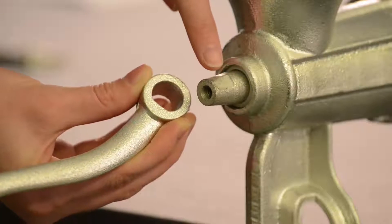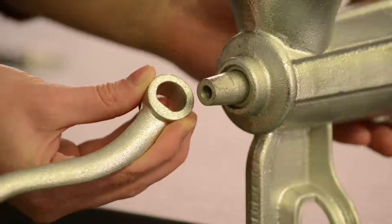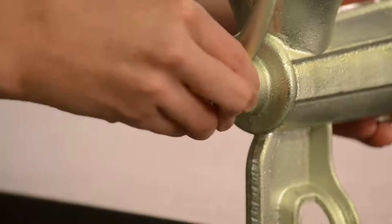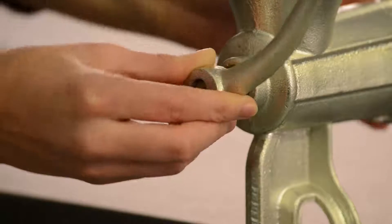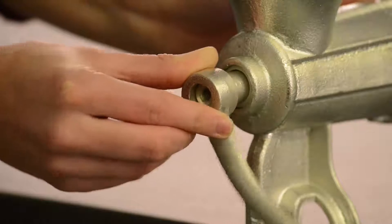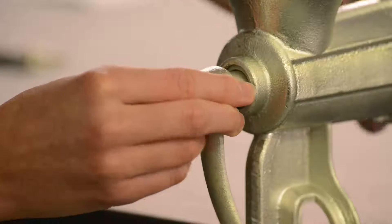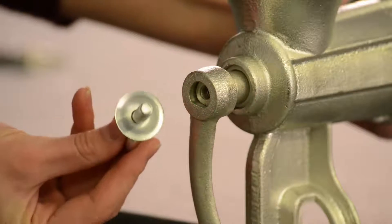Align the smooth side of the mincer handle with the smooth end of the auger. Attach the handle to the auger and secure in place with the eye screw.